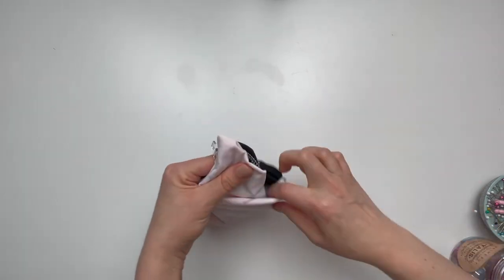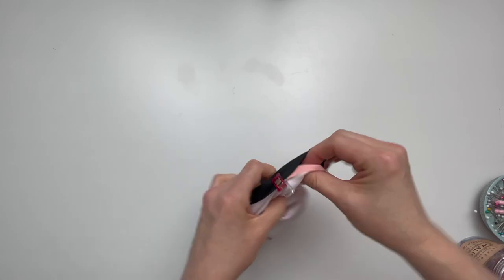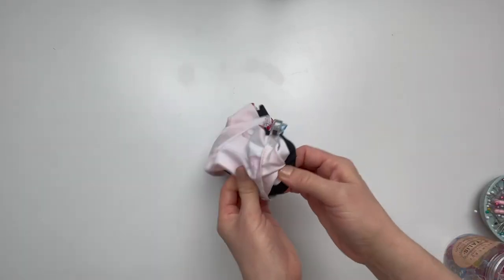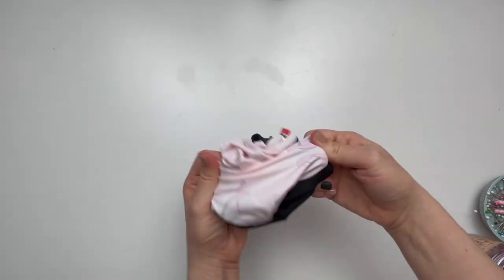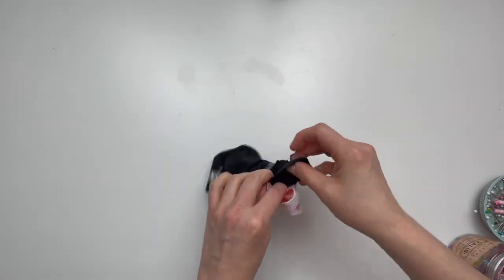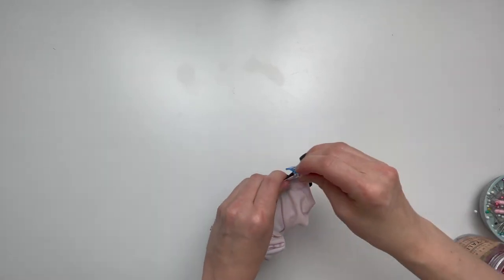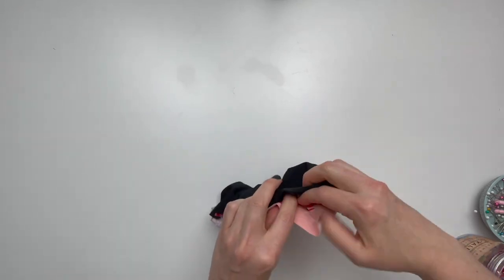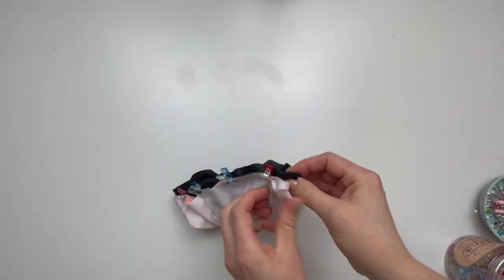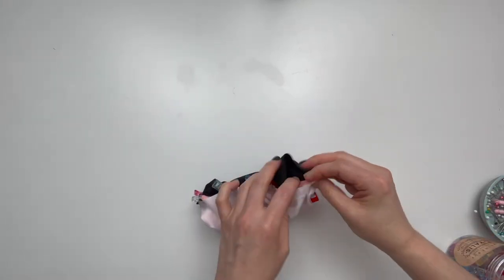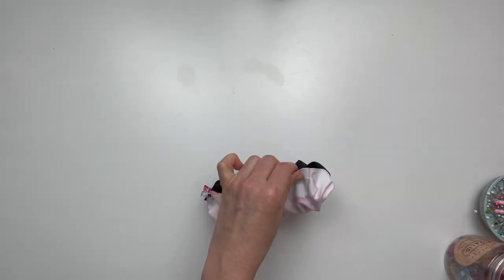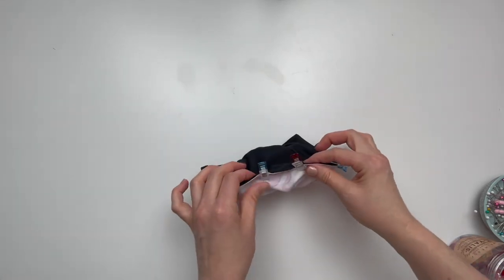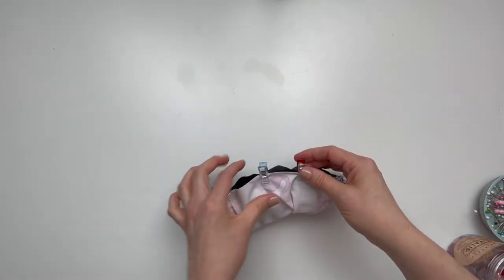Continue pinning along the raw edge, pulling from the tunnel that we've created, until you meet up with your original pin. Sew or serge to complete this seam, making sure to leave a 1 inch gap at some point in this seam.